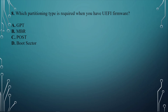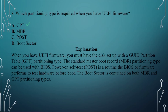Question number eight: Which partitioning type is required when you use UEFI firmware? A. GPT. B. MBR. C. POST. D. Boot Sector. The answer is A, GPT. When you have UEFI firmware, the disk must be set up with a GUID partition table. The standard master boot record partition type can be used with BIOS. Power-on self-test (POST) is a routine the BIOS or firmware performs to test hardware before boot. The boot sector is contained on both MBR and GPT partition types.